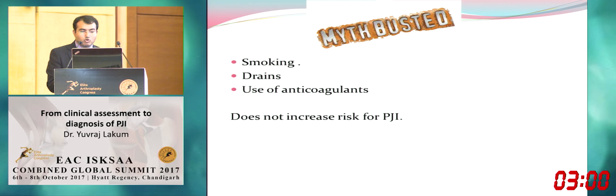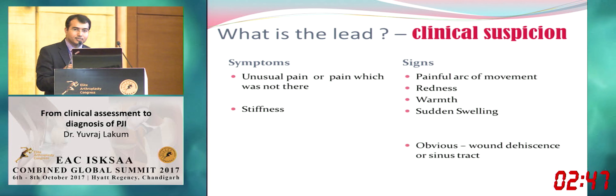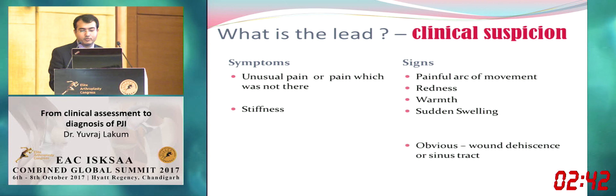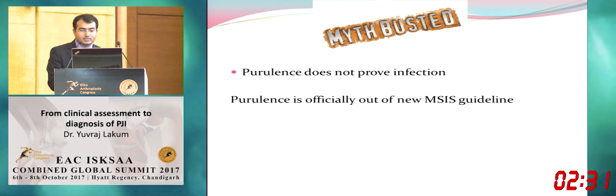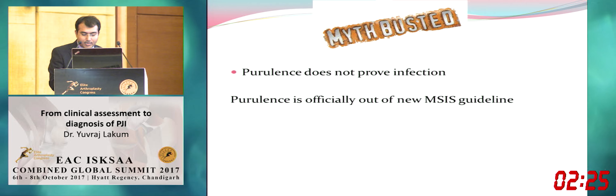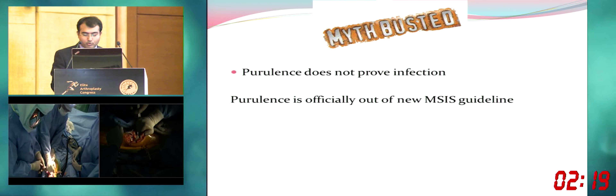There are some myth busters: smoking doesn't lead to prosthetic joint infection; drains and anticoagulants don't lead to PJI. Clinical symptoms include unusual pain and sometimes stiffness. Signs include redness, warmth, swelling, painful arc of movement, and sometimes obvious signs like sinus tract. Purulence does not prove infection and is officially out of the new MSIS guideline because of inter-observer unreliability, especially in the era of metal-on-metal and other adverse reactions.